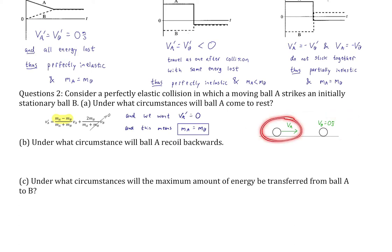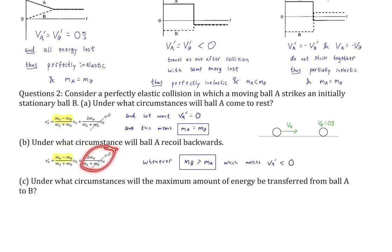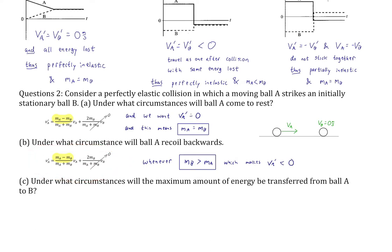Under what circumstances will A recoil backwards? VA prime is less than zero when the numerator (MA - MB) is negative, meaning MB must be greater than MA. A larger B will make the numerator negative, and since VA was positive, VA prime becomes negative. And for maximum energy transferred from A to B: using the final velocity equation for B, when MA equals MB, VB prime equals VA — B reaches A's initial speed, stealing all the energy. A comes to rest and transfers all energy to B.